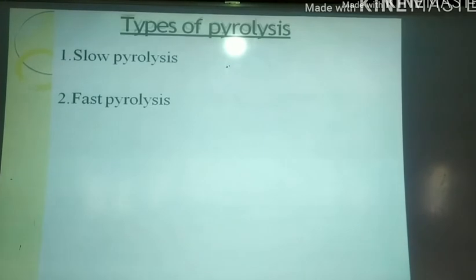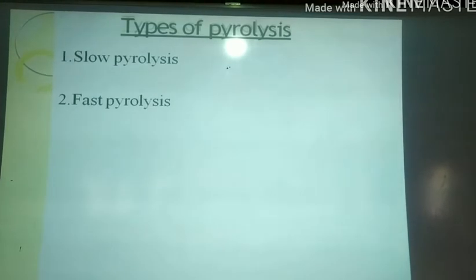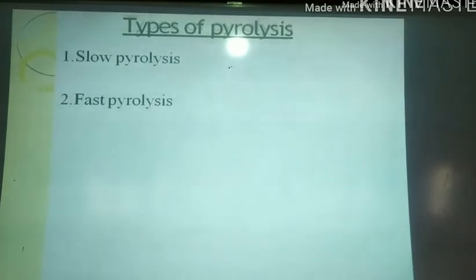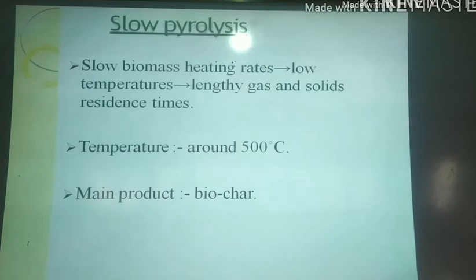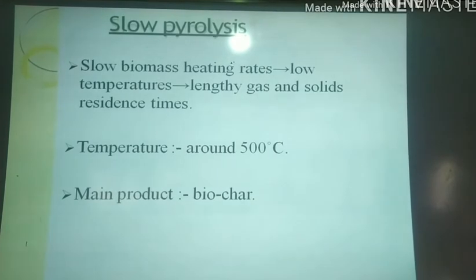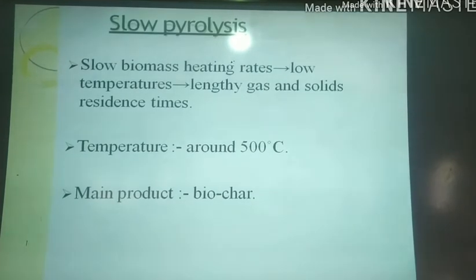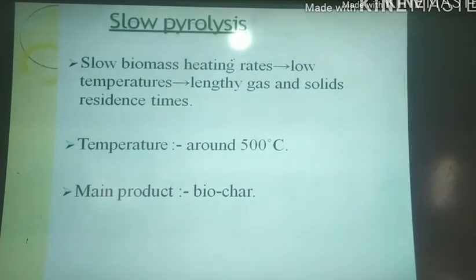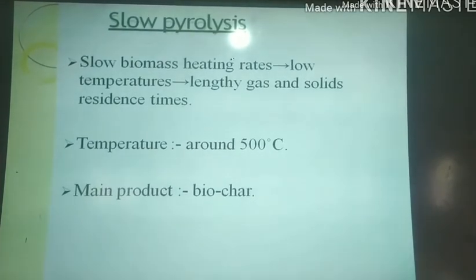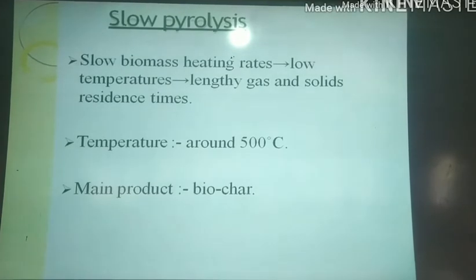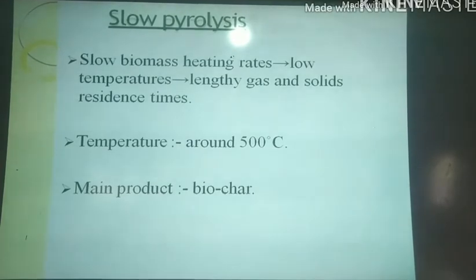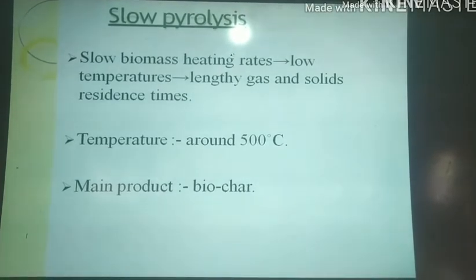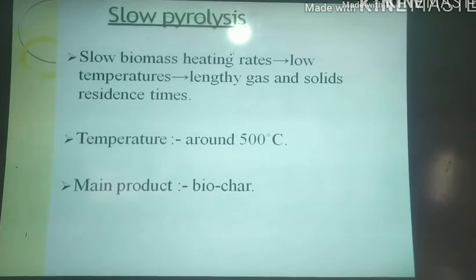Types of pyrolysis: slow pyrolysis and fast pyrolysis. Slow pyrolysis involves slow biomass heating rates, low temperatures, and lengthy gas and solids residence times. The temperature is around 500 degrees Celsius and the main product is biochar.